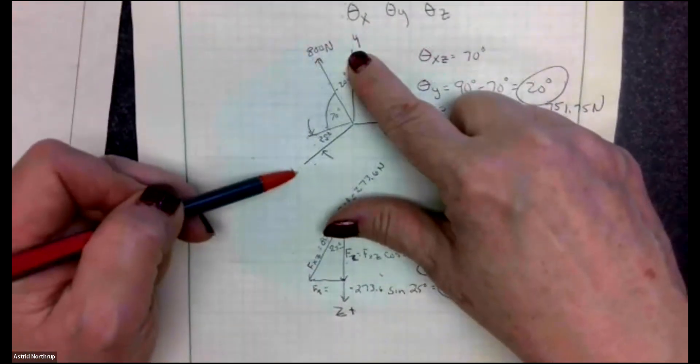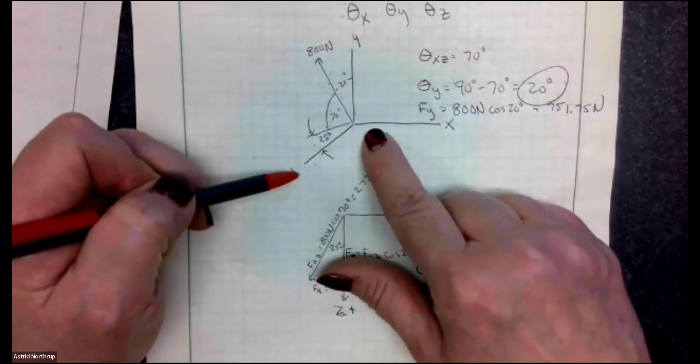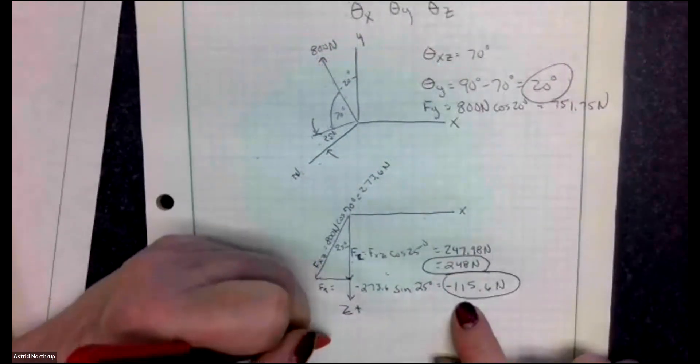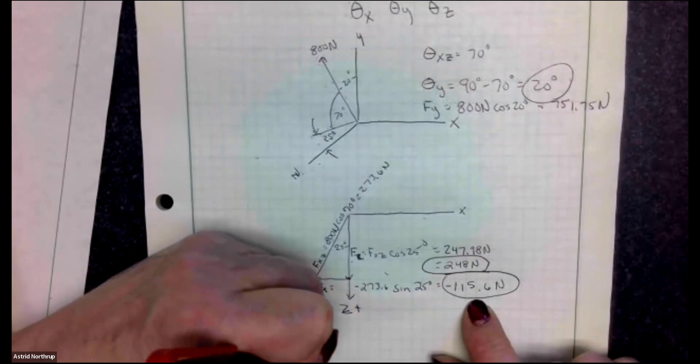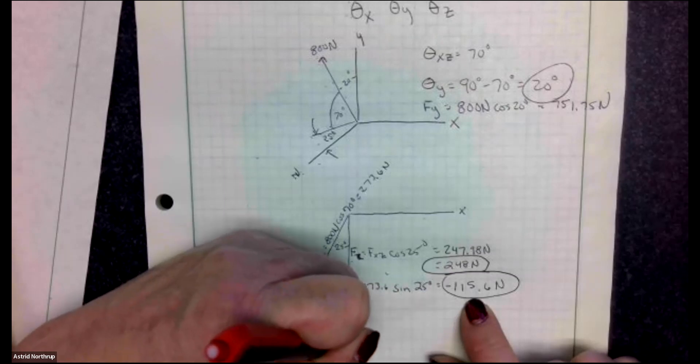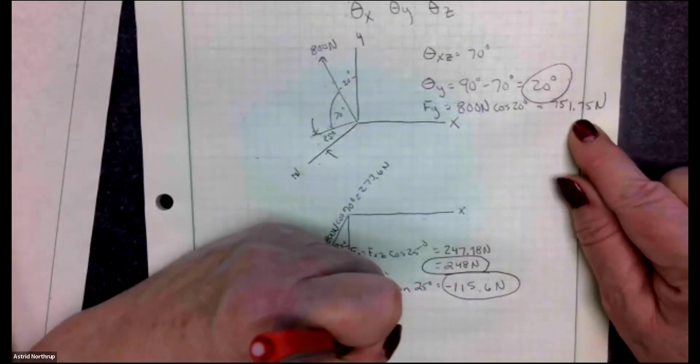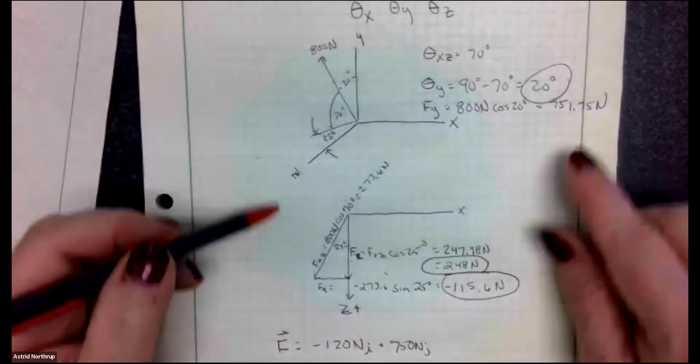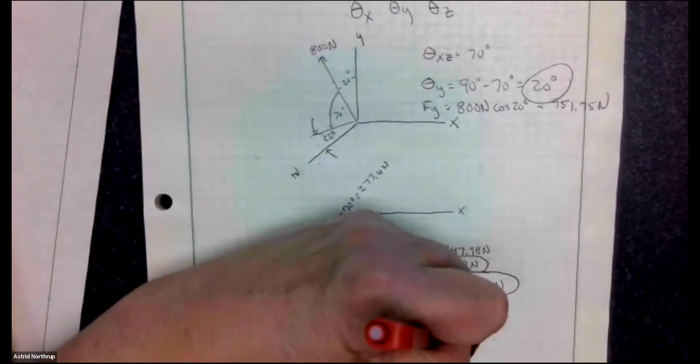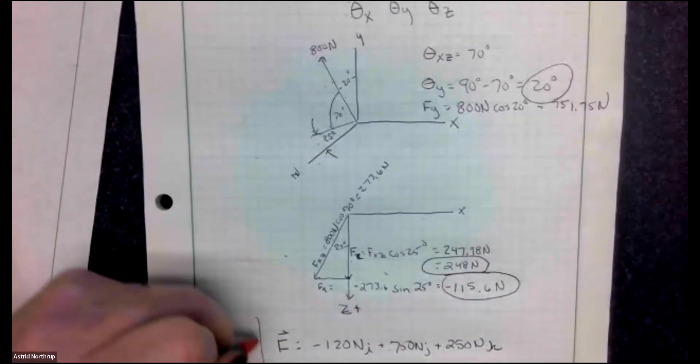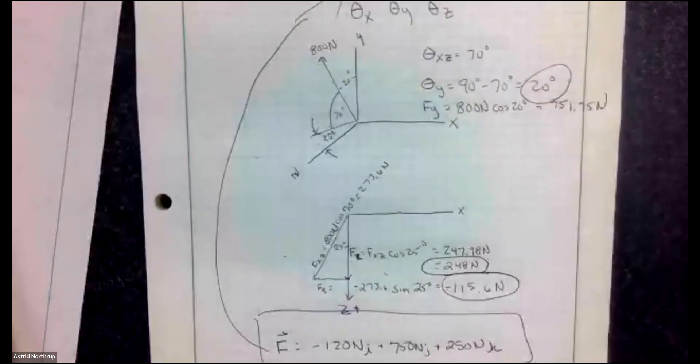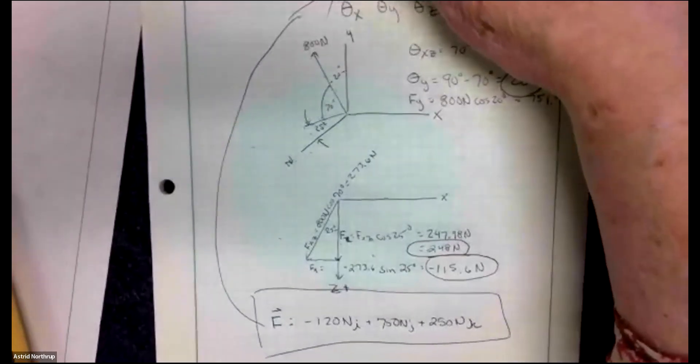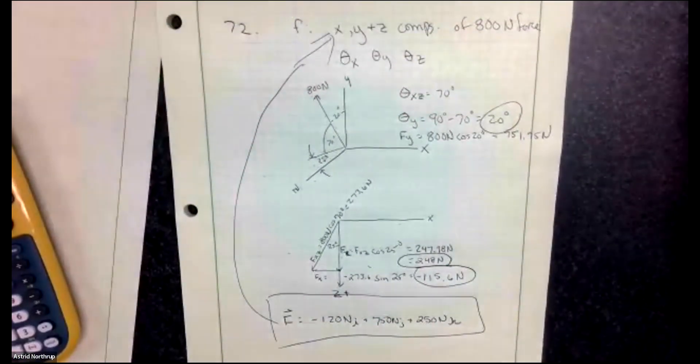Now, if you look at the force, it's positive in the Y direction, positive in the Z direction, but it's negative in the X direction. So if I were to write this as a vector, I could say that force is equal to the negative of 115.6, which is really negative 120 in the proper number of significant figures, I plus 751.7, which is 750 Newtons J. And then in the Z direction, positive 248 or 250 Newtons K. So this is the first part of my answer right there.